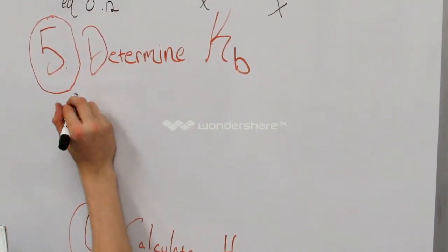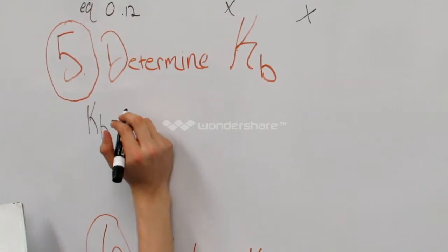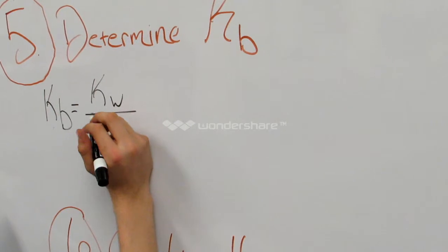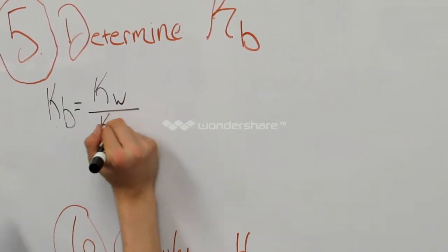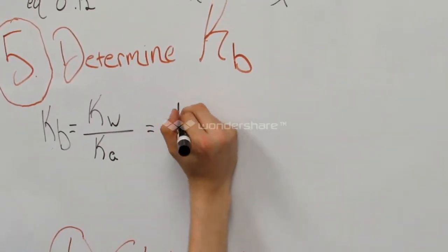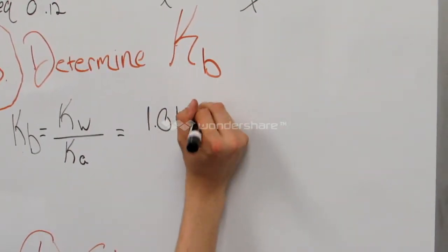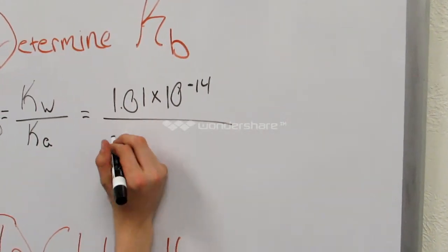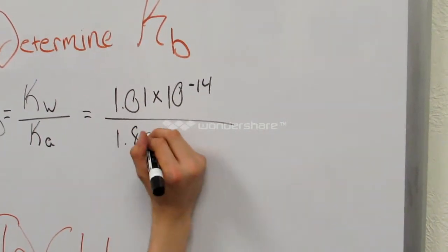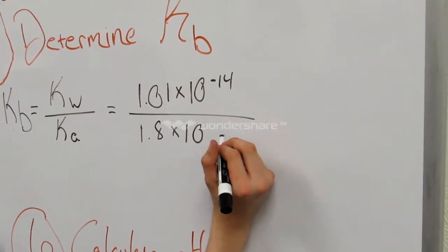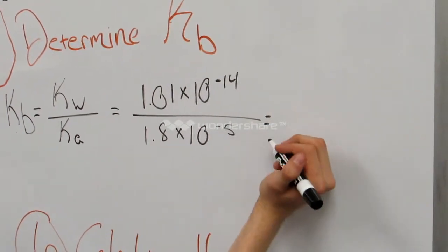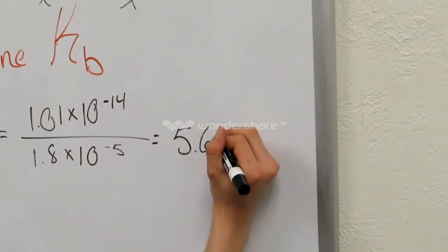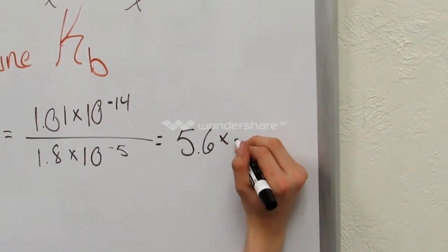Time for the fifth step — determining the KB, the Determining part of our mnemonic. KB always equals KW divided by KA, or vice versa, KA equals KW divided by KB, depending on what you're solving for. You put 1.01 times 10 to the negative 14th over KA, which is 1.8 times 10 to the negative 5th, and this should equal 5.6 times 10 to the negative 10th.